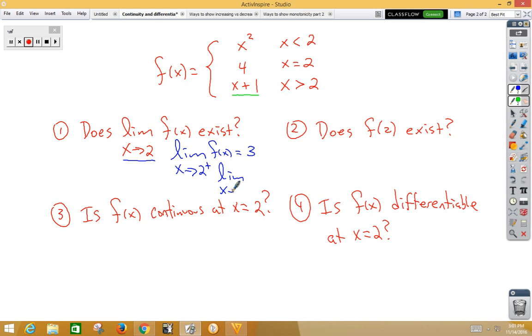Limit as x approaches 2 from the left side of f of x. That would be using x squared. And when we plug in the 2, we would get a 4. Since these values are different, no, the two-sided limit does not exist.